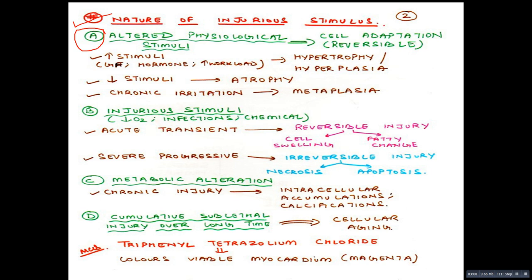Let us look at the different kinds of injury stimulus. Number one: whenever there is an altered physiological stimulus, the cell will go to cell adaptation. Cell adaptations are reversible changes. If we increase the stimulus — for example, growth factors, hormones, or increased workload — it will lead to hypertrophy or hyperplasia. If we reduce the stimulus, it can lead to atrophy. And if we cause chronic irritation, it can lead to metaplasia. Hyperplasia, hypertrophy, atrophy and metaplasia are kinds of cell adaptation and they are reversible changes.